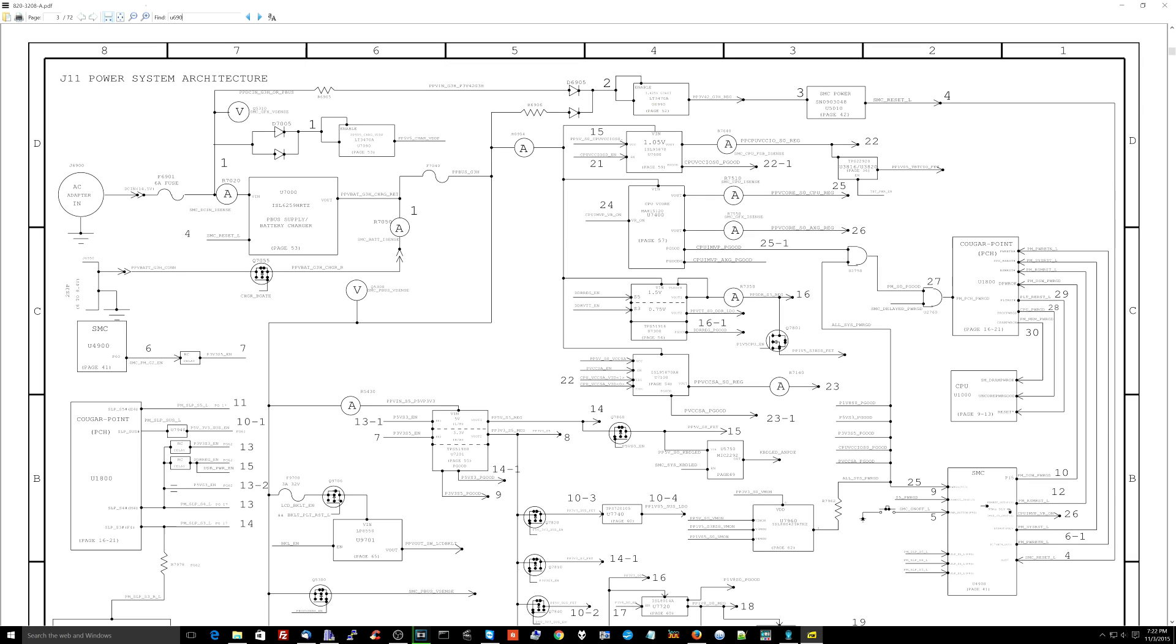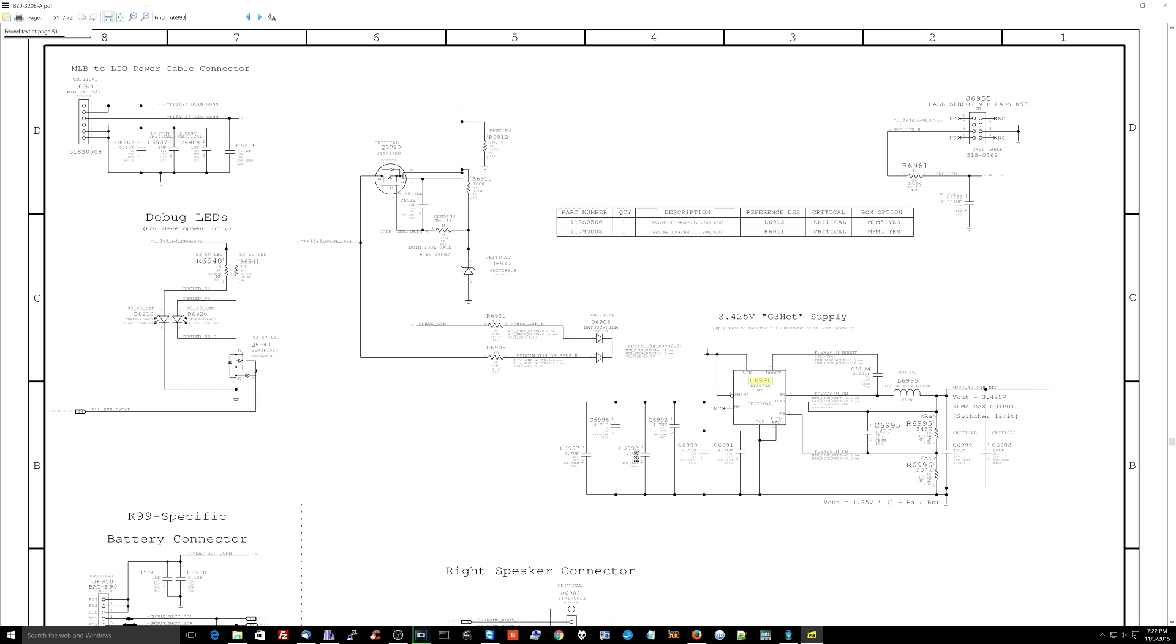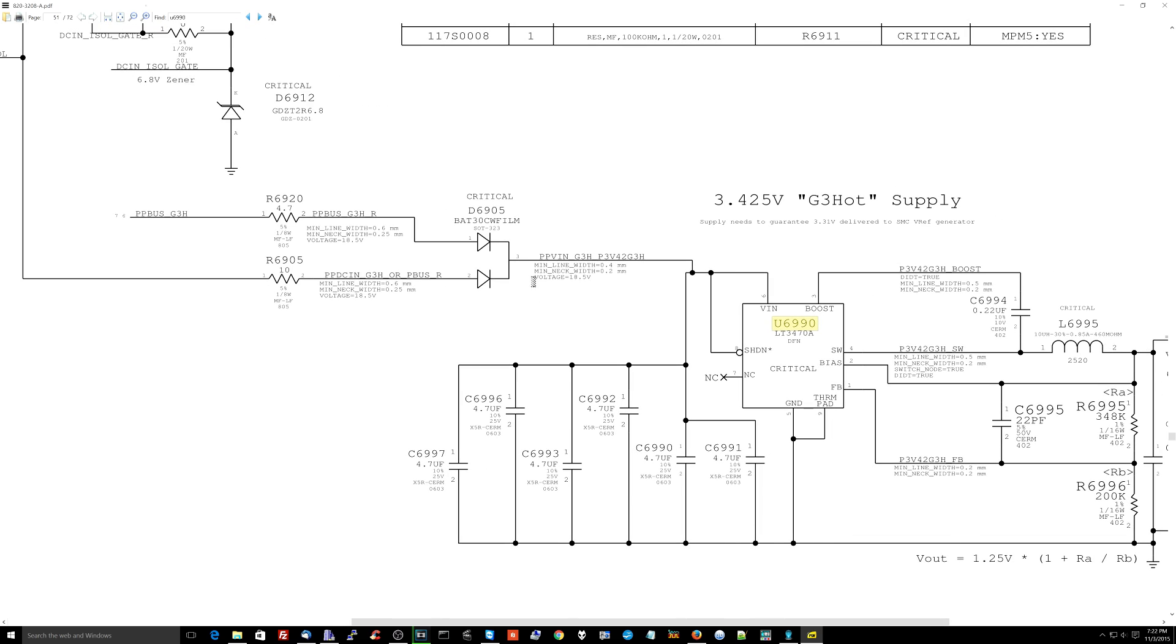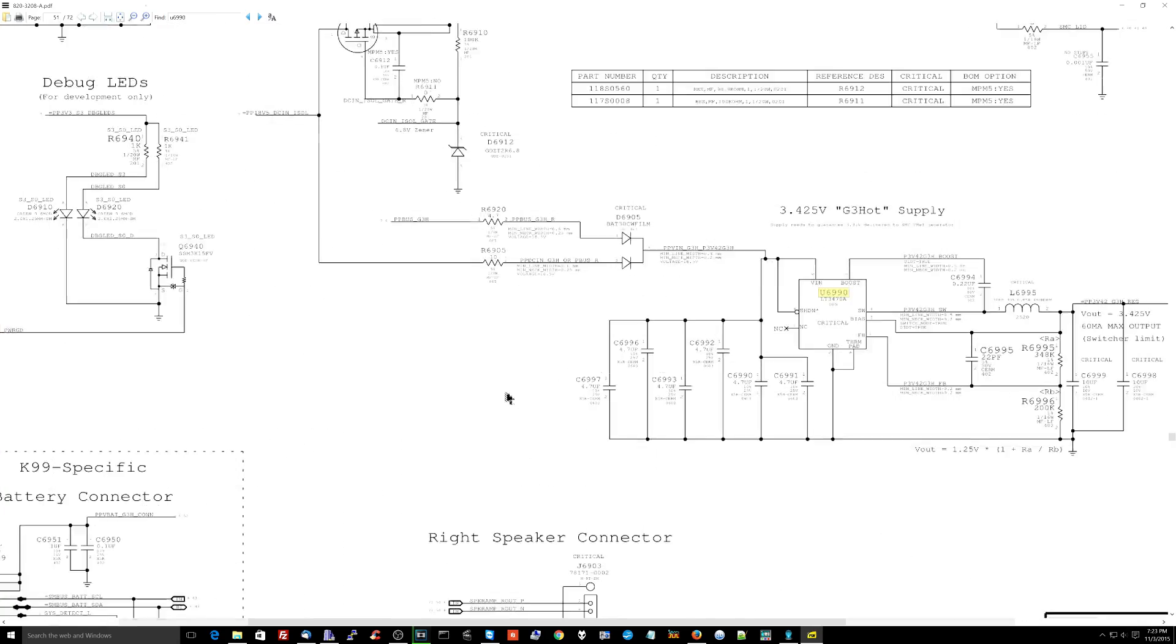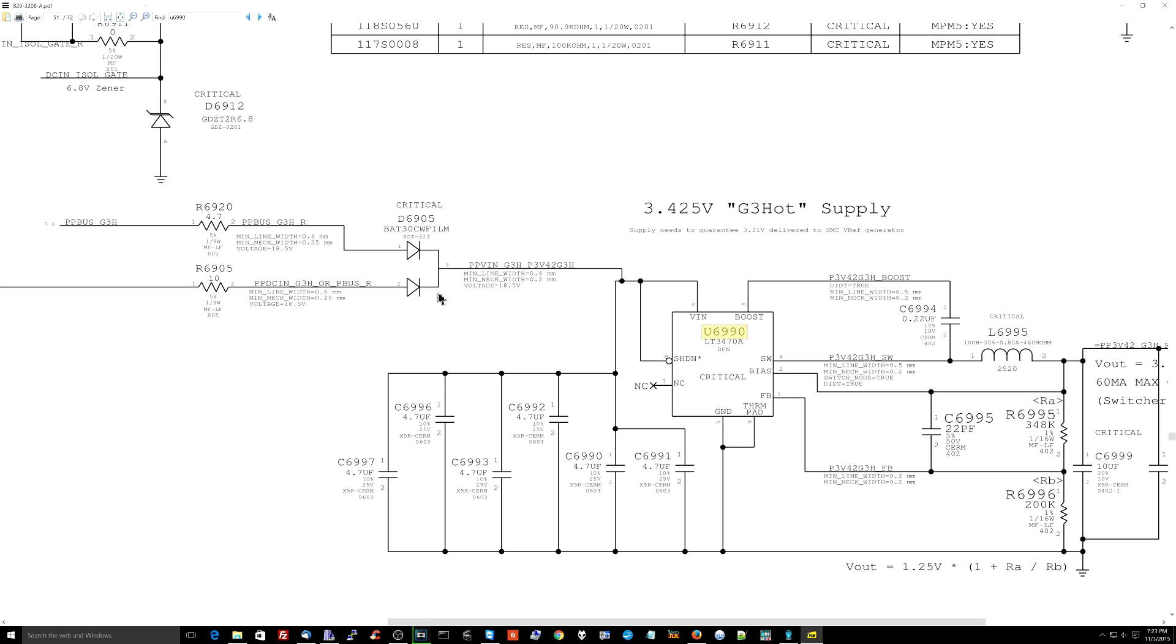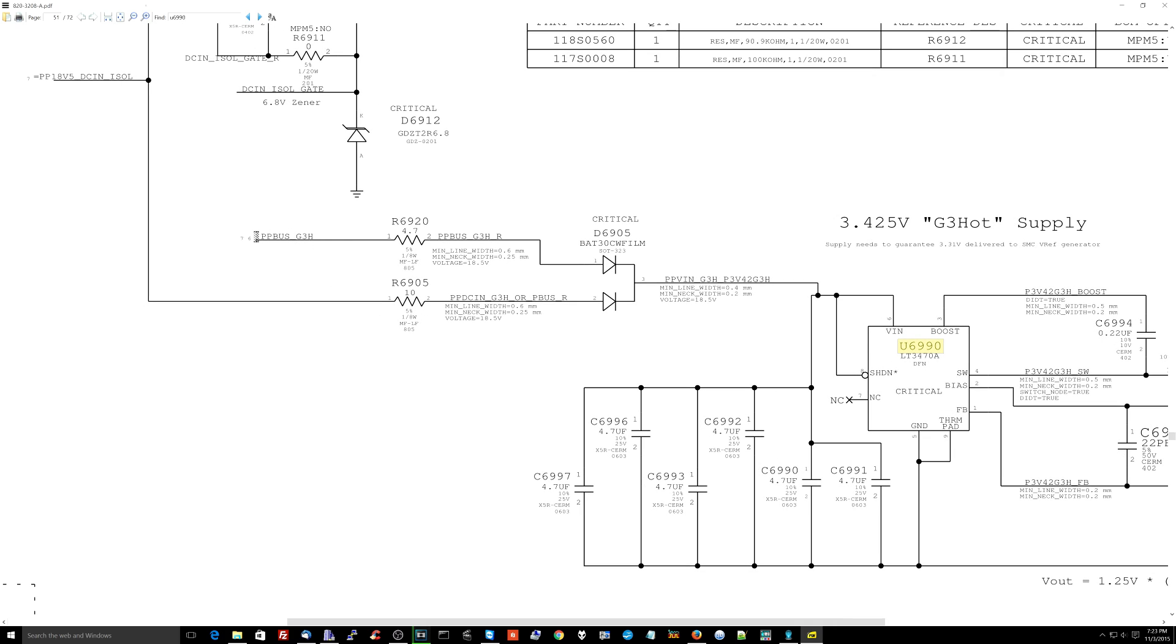The problem that's going to happen if the battery and charger are plugged in without any slick circuitry is that the charger at 18 volts is going to go through, the charger is going to create PPBUS_G3HOT, which will also go to the input, and you're going to get something that goes poof. So you have a little diode, set of diodes, and also these resistors for surge protection.